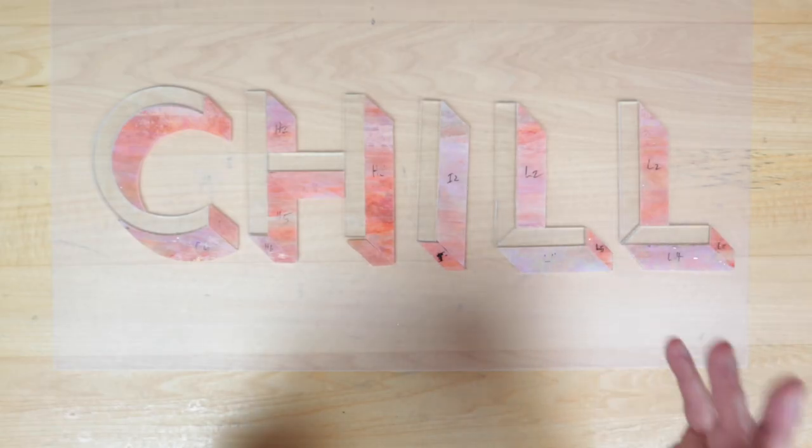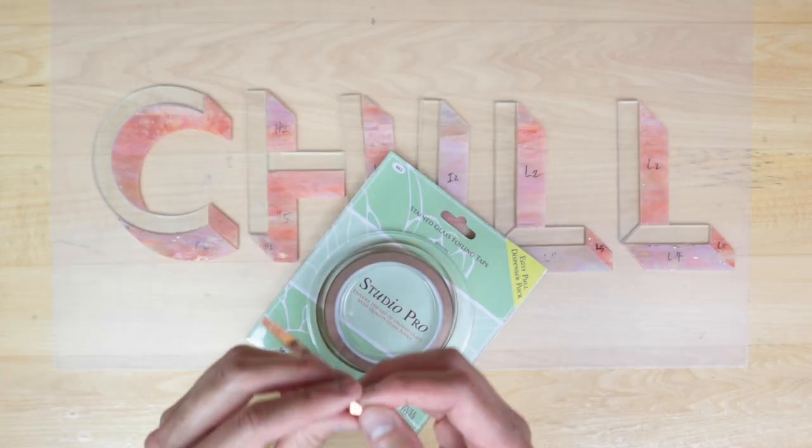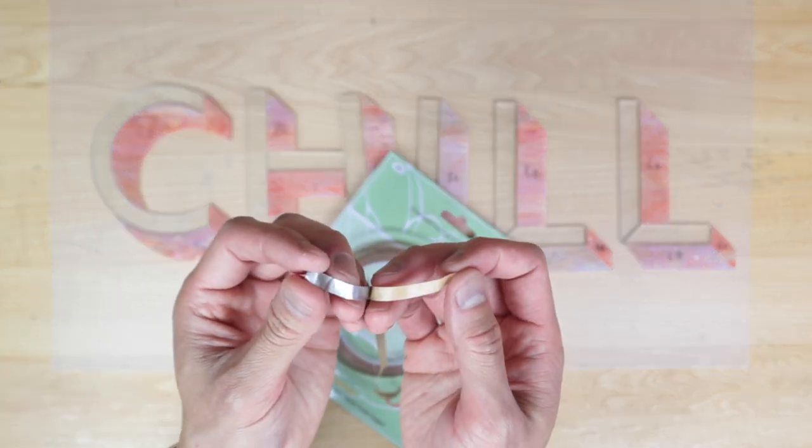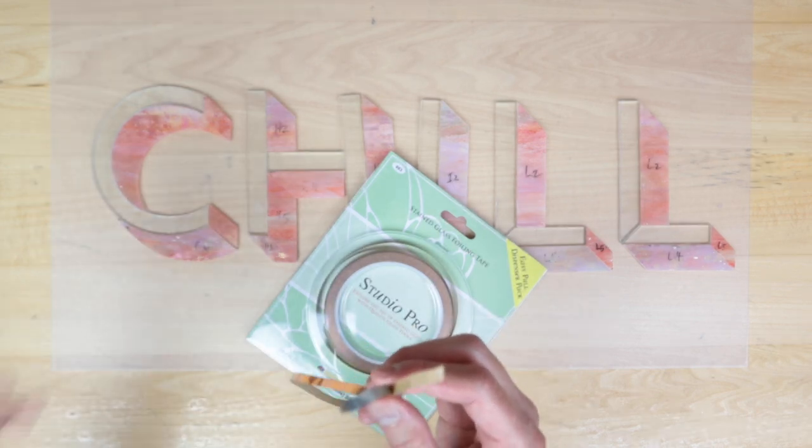Alright, everything looks really nice. The grinding went well. And the next thing we're doing is copper foiling. And I'm using the silver backed copper foil tape for this one. We won't be doing any patina. I think the silver is going to look really good with the letters.